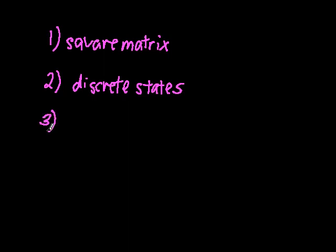Also, the transition probabilities, or the numbers in the transition matrix, must remain constant with each generation. Lastly, each row of the matrix must add up to 1.